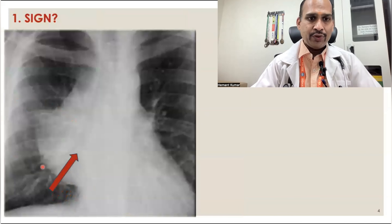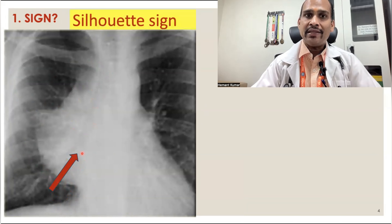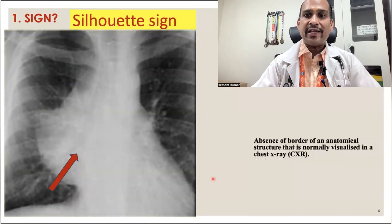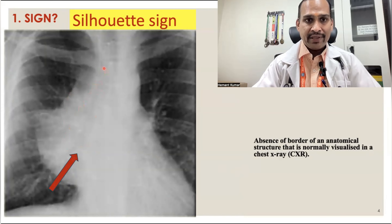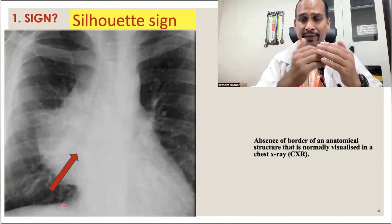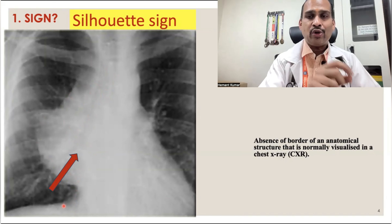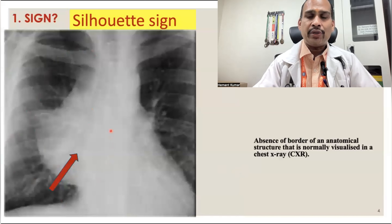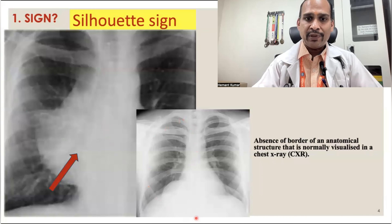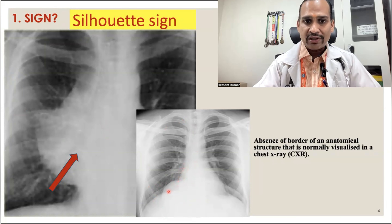Sign 1 is the Silhouette sign. If you see carefully, there is opacity on the right side. The Silhouette sign is the absence of the border of an anatomical structure normally visualized on a chest X-ray. In this opacity, we cannot make out the right heart border. Whenever there is obscuring of a normal structure — like the diaphragm, heart, or mediastinum — and we cannot make out a clear border, this is called Silhouette sign positive. In another X-ray, there is opacity, but it is not silhouetting the right cardiac border or the diaphragm — both borders are clear. That means the Silhouette sign is negative there.